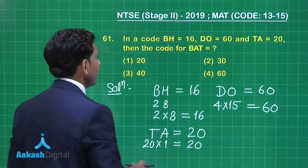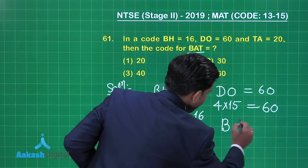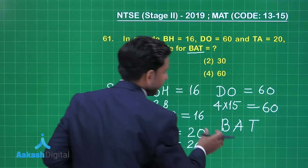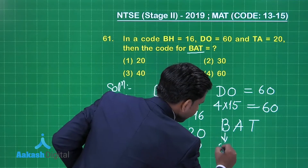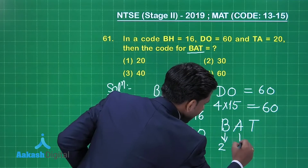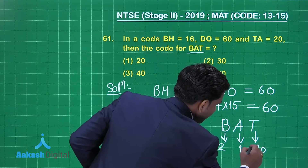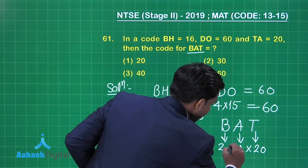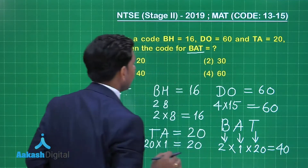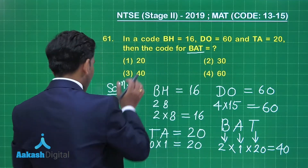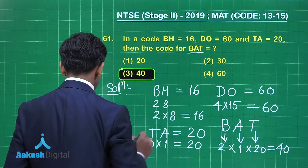When we apply this pattern to the word BAT, we obtain the value of this expression. B is at the 2nd position, A is at the 1st position, and T is at the 20th position in the English alphabet. The product of these numbers is equal to 40.